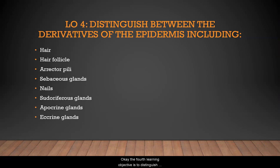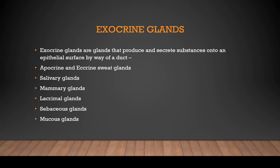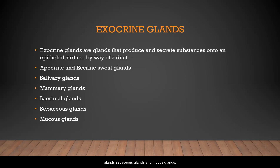Learning Objective 4: distinguish between the derivatives of the epidermis, including hair, the hair follicle, the erector pili, sebaceous glands, nails, sudoriferous glands, apocrine, and eccrine glands. Exocrine glands are glands that produce and secrete substances onto the epithelial surface by way of a duct. Examples include apocrine and eccrine sweat glands, salivary glands, mammary glands, lacrimal glands, sebaceous glands, and mucous glands.